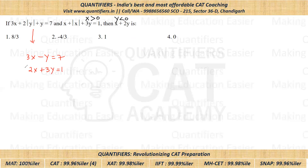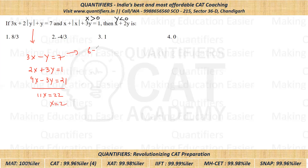Now let's multiply the first equation by three. So I'll get nine X minus three Y is equal to 21. Now adding the two equations, we'll get 11 times X is equal to 22, so X comes out to be two. Putting X equal to two in the first equation, we'll get three into two — that is six — minus Y is equal to seven. So Y comes out to be six minus seven, that is negative one. So X is two and Y is negative one.